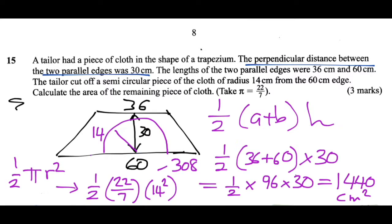I'll write that here. We're going to do 308 subtracted from 1440. And that gives us 1132.